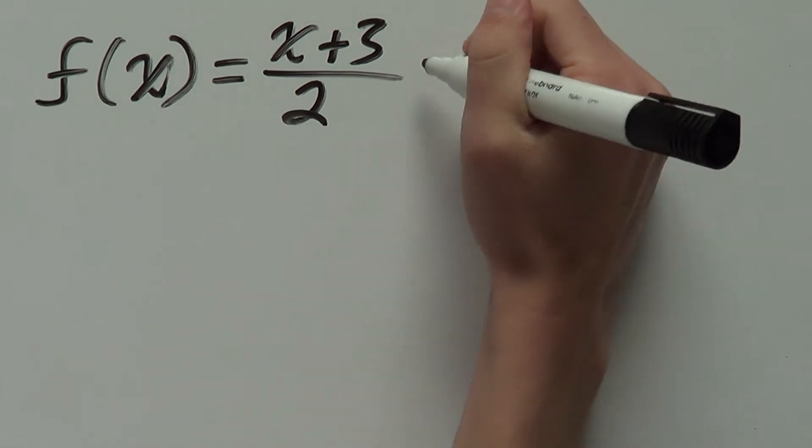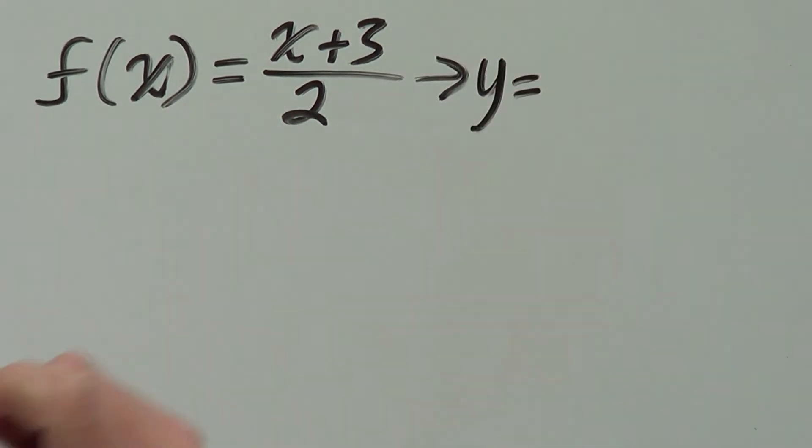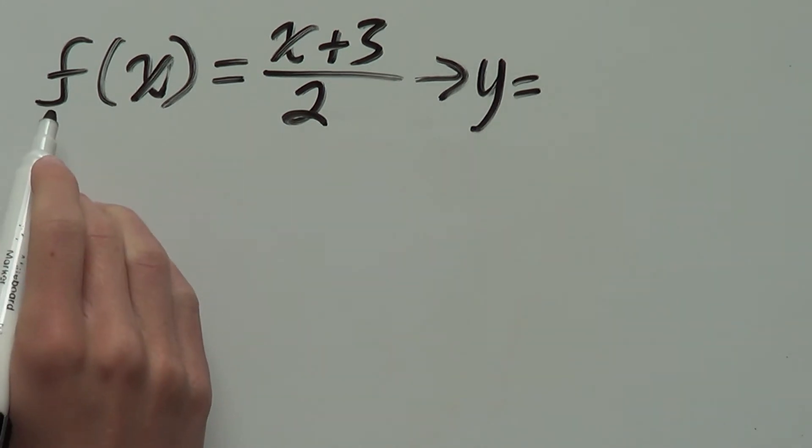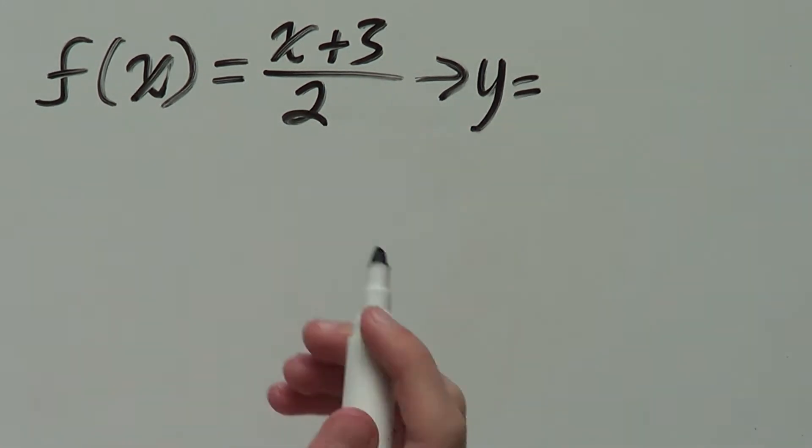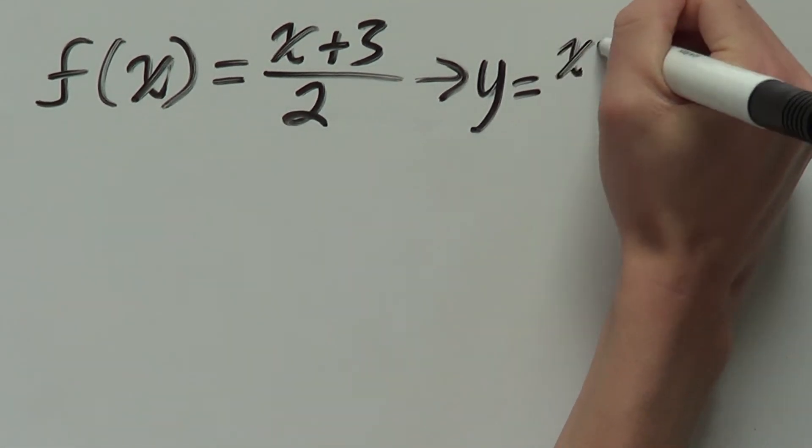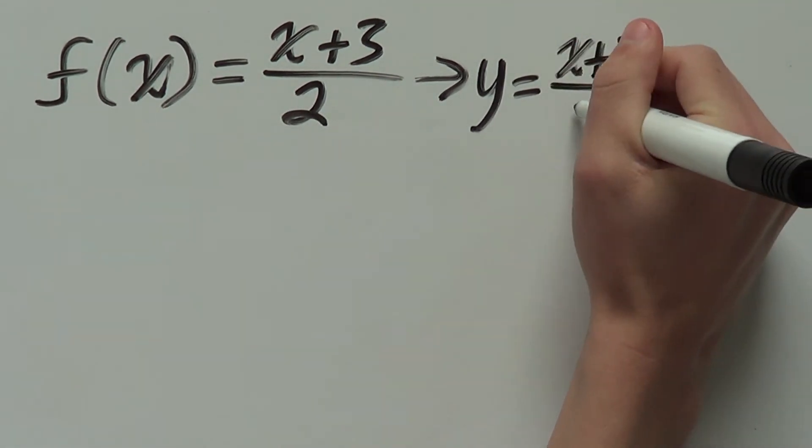Step one, let's rewrite this with y instead of f of x. Just replace f of x with y and that gives us y equals x plus 3 over 2.